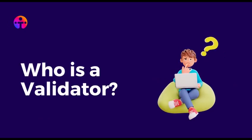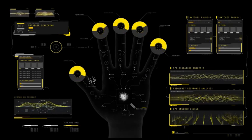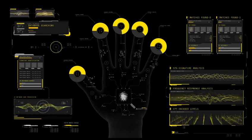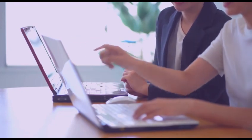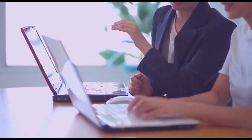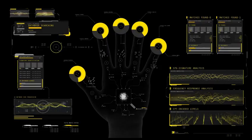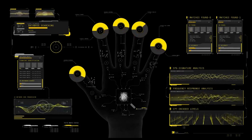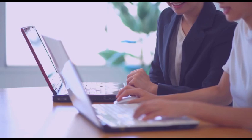A validator is a node in a blockchain network that participates in the process of validating transactions and maintaining the integrity of the blockchain. In a proof-of-stake blockchain, validators are chosen to create new blocks and validate transactions based on the amount of stake they hold on the network. Validators are responsible for reaching consensus on the state of the blockchain and ensuring that it is tamper-proof.